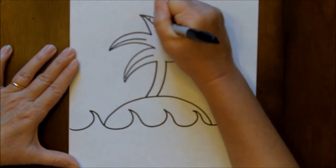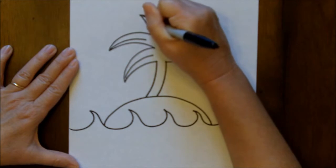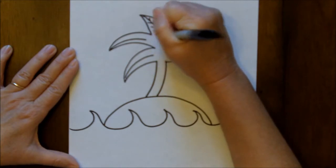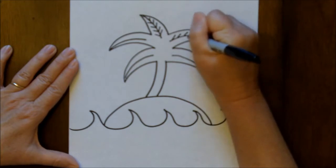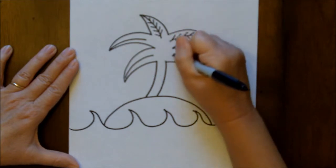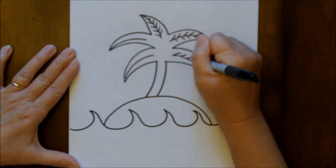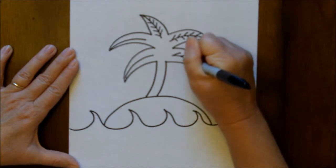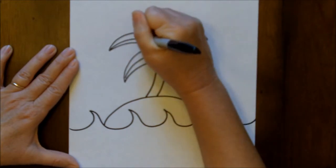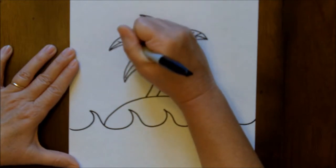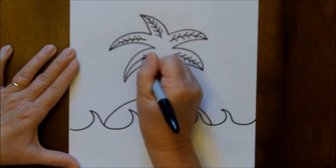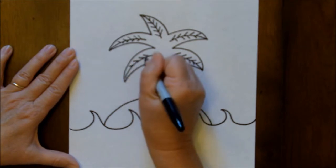And then some smaller lines to make the fronds look a little bit more detailed. And they're pointing towards the end of the palm frond. So we just keep making those lines to give it some details. And I'm going kind of fast here, so if you feel like you need to pause this video, feel free to do that.